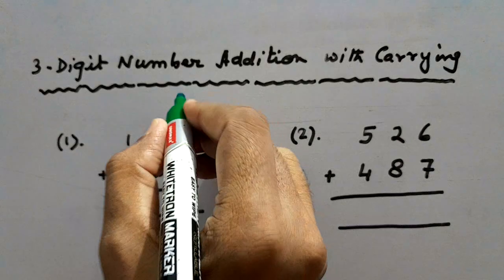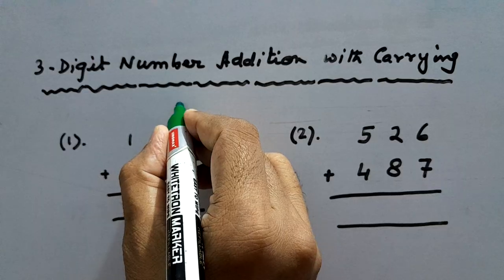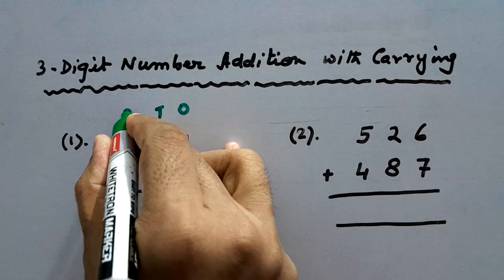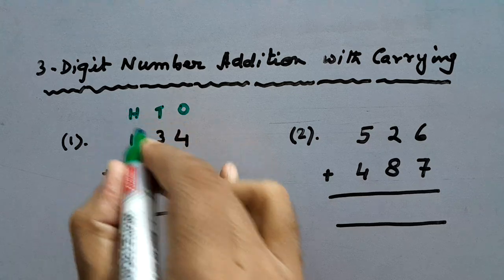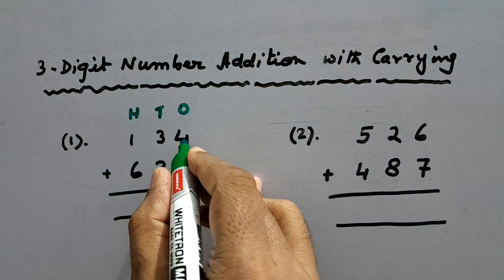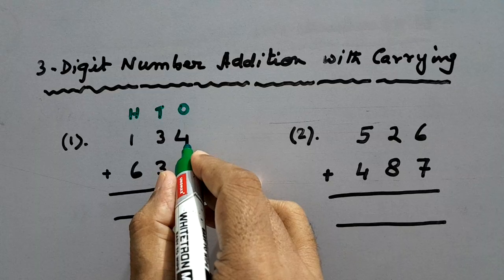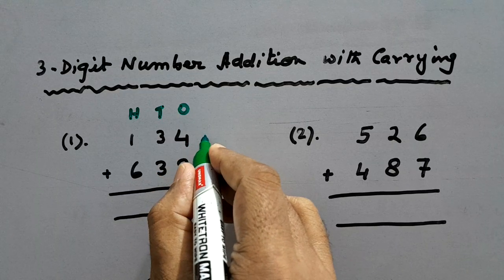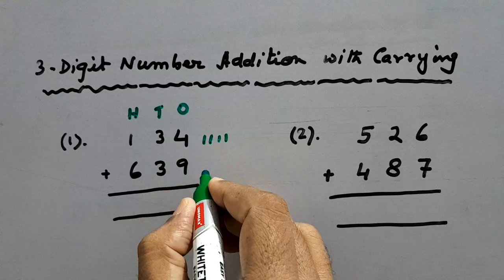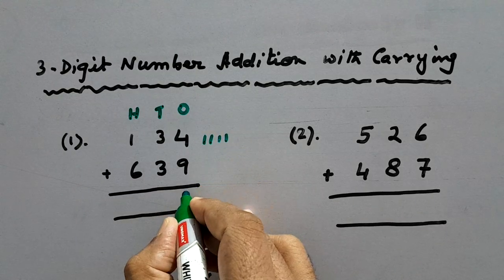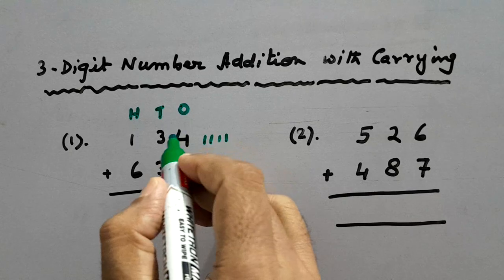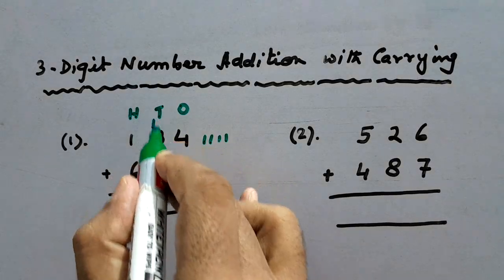So first we'll write here — this is the ones column, this is the tens column, this is the hundreds column. So here 9 plus 4 equals 13. For 13 ones, we'll write three in the ones column and carry one in the tens column.